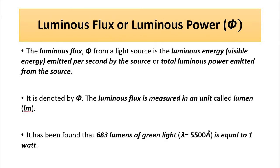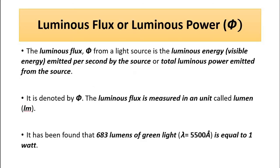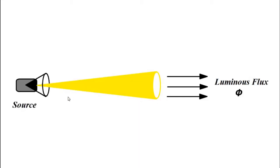Let us say we have a source of light and it is emitting visible radiations. Luminous flux is the total visible power or luminous power which is emitted from the source, or the visible energy or luminous energy emitted per second. We know energy per second — energy divided by time — that is power. In any way you want to define it, it is the same. That is luminous flux.